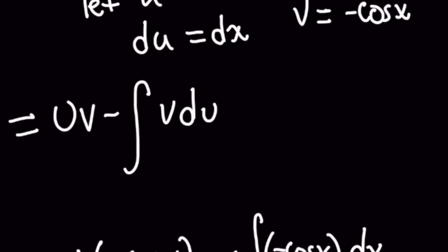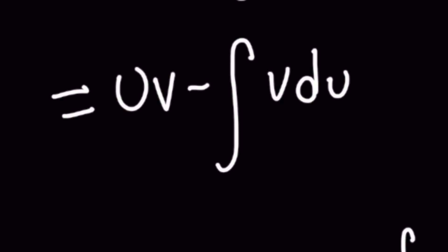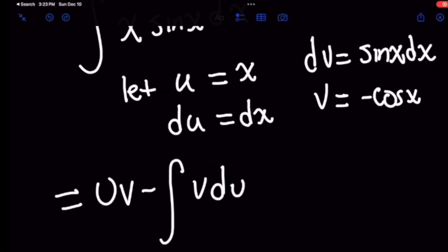Okay so moving along the integration by parts formula is uv minus the integral of vdu and all we're doing here is we're going to be plugging in our choices of u and v along with du.